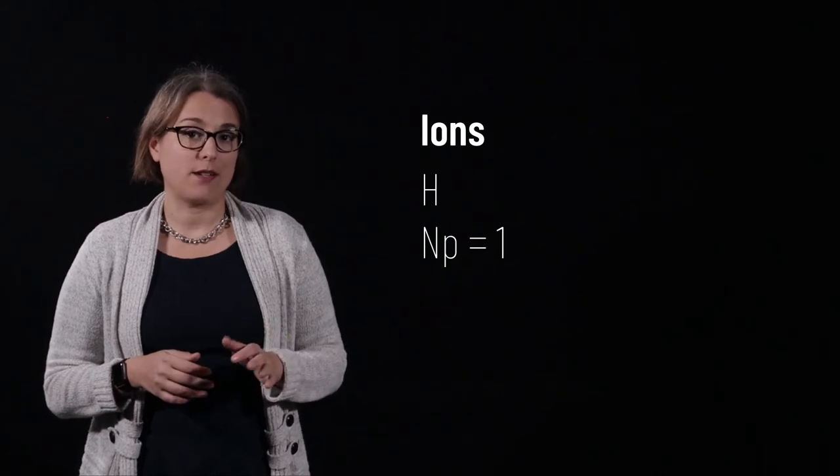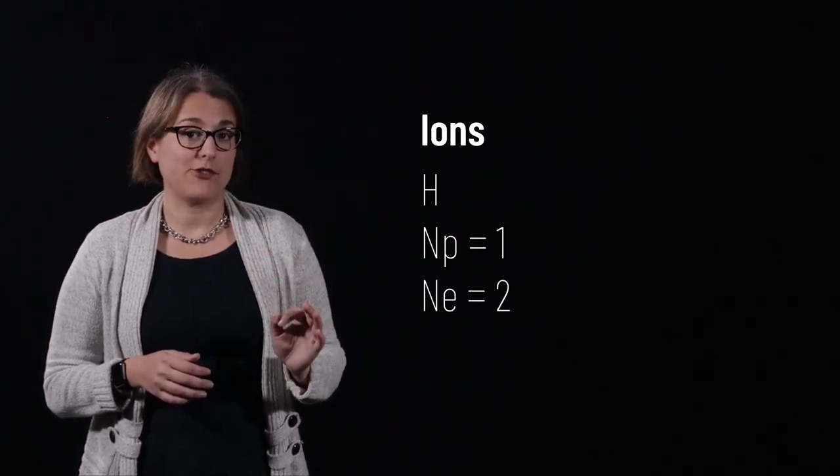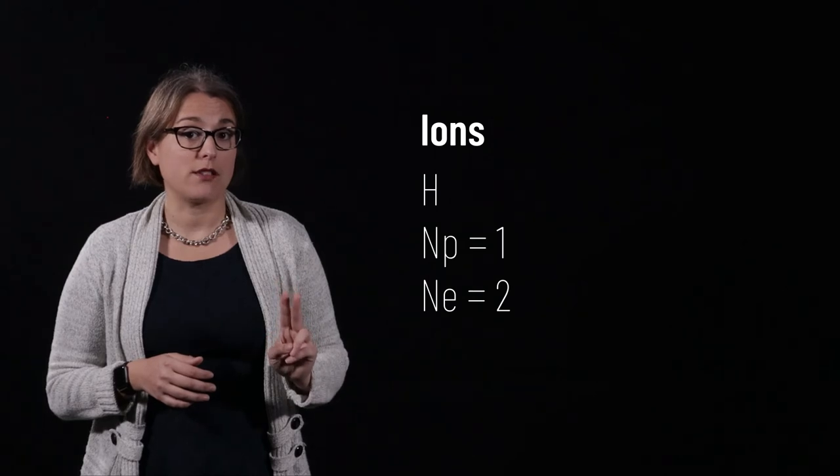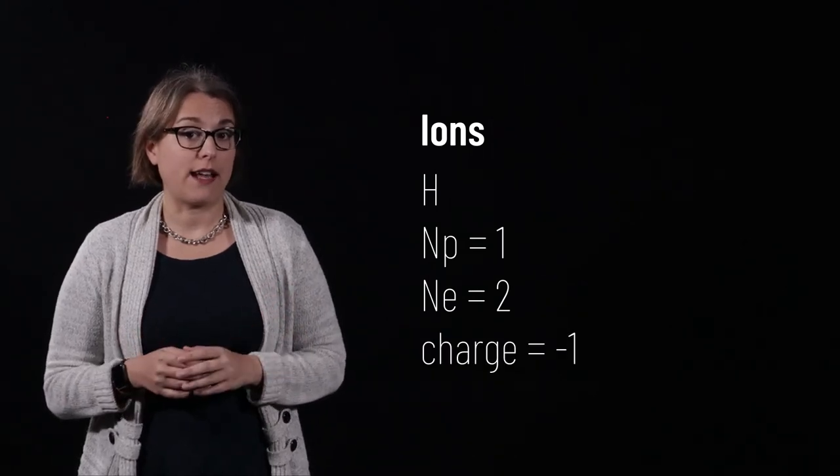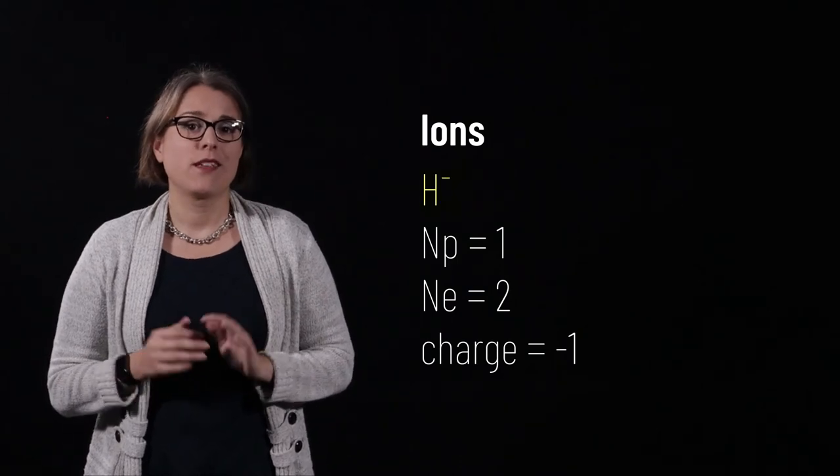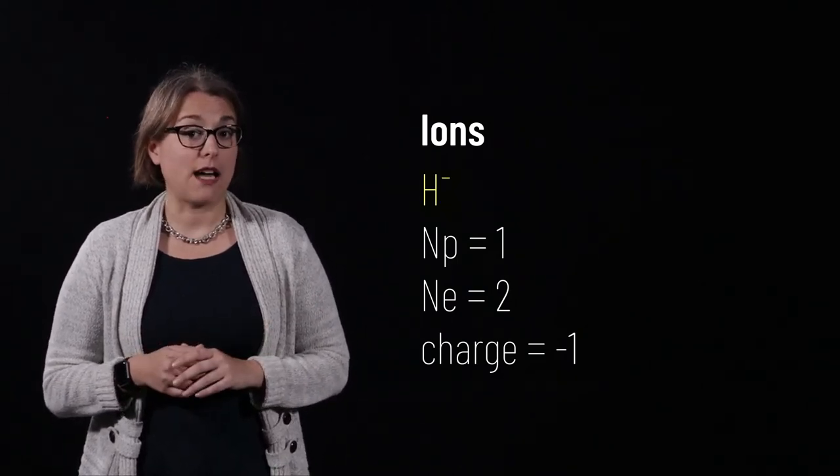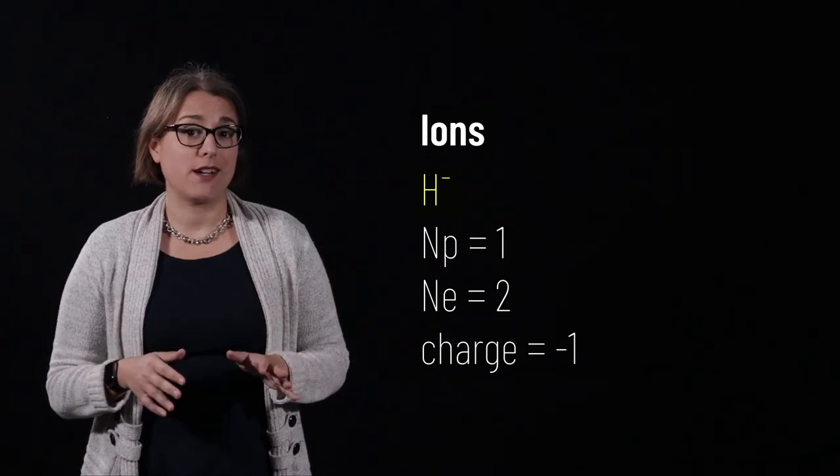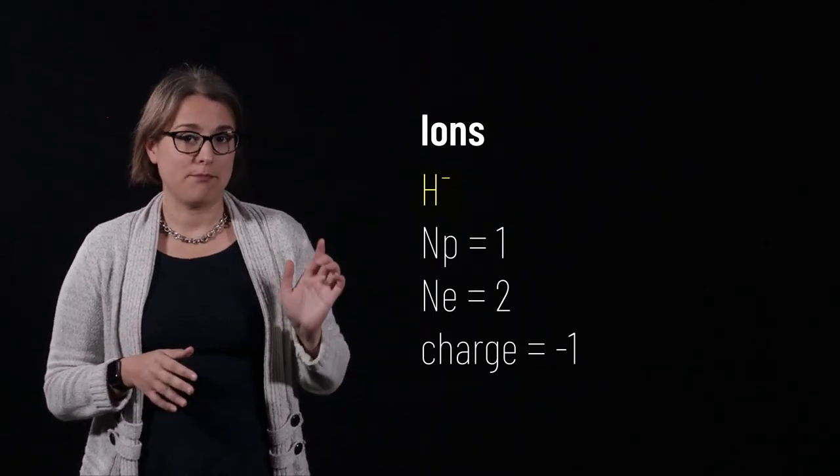A hydrogen atom has one proton. If a particular hydrogen atom has two electrons, then we know the charge of that atom is 1 minus 2, or negative 1. The charge is represented as a superscript after the atomic symbol. This particular ion is represented as H minus.